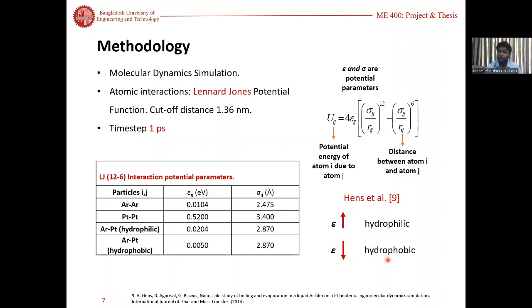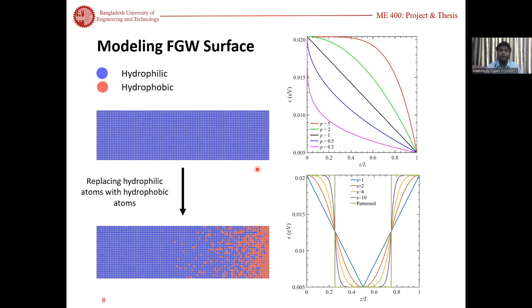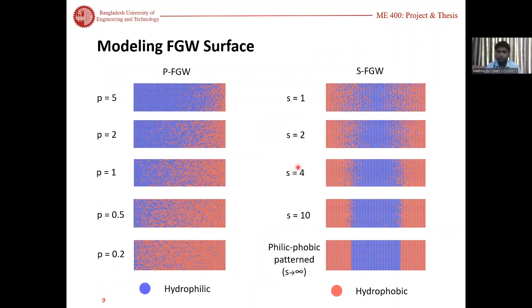In order to model our surface, we first create a hydrophilic surface and then replace the hydrophilic atoms with hydrophobic atoms according to the gradient function discussed previously. As we can see, the value of epsilon and wettability gradually changes along the z-axis with different values of p. With our modeling scheme we have developed ten different surfaces and conducted thin film phase change heat transfer above these surfaces.